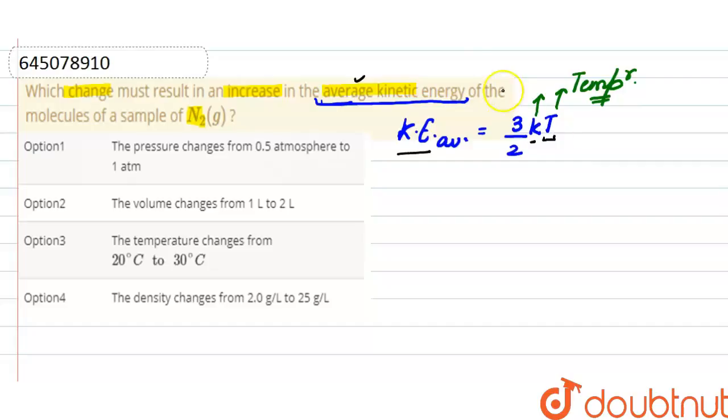And in option three, it's given that the temperature changes from 20 degrees Celsius to 30 degrees Celsius.